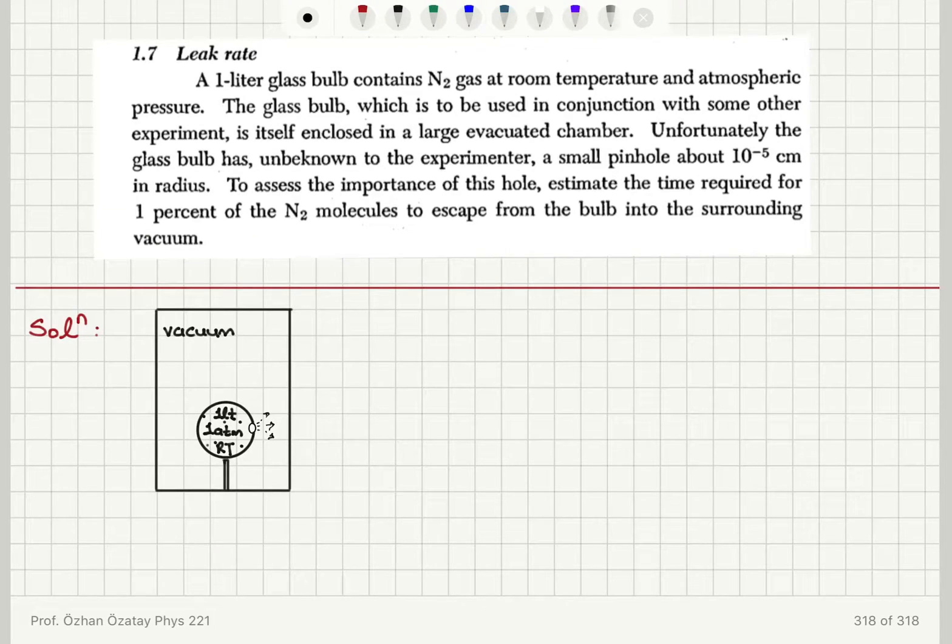Now let's consider this problem on the leak rate. A one liter glass bulb contains nitrogen gas at room temperature and atmospheric pressure. The glass bulb, which is to be used in conjunction with some other experiment, is itself enclosed in a large evacuated chamber.